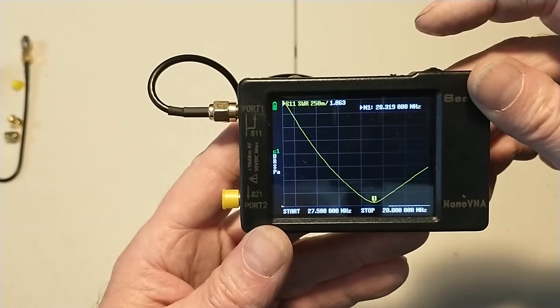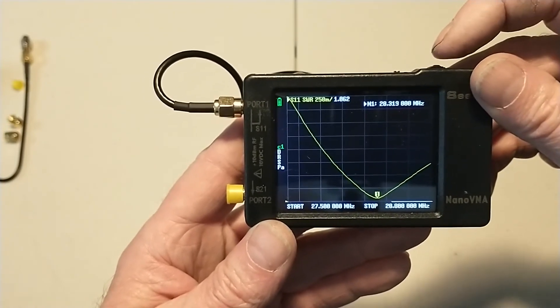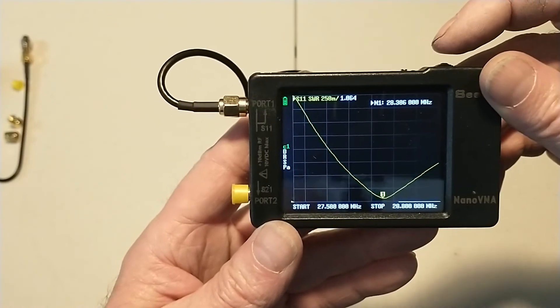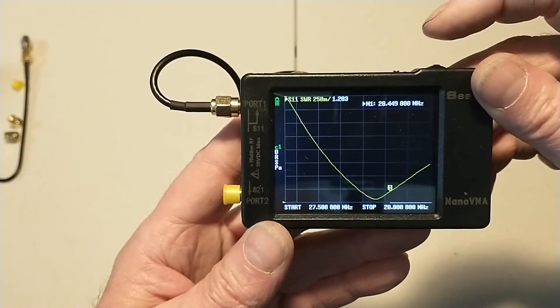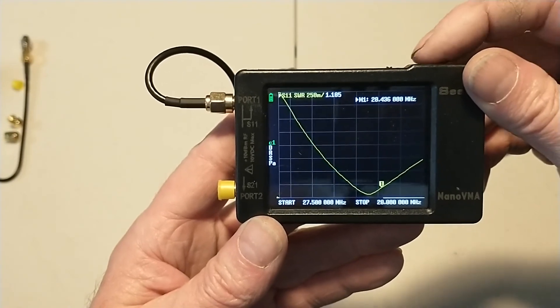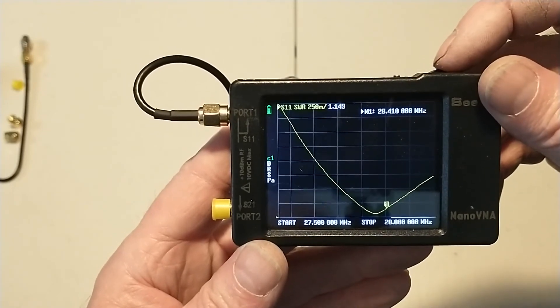So now we're resonant at 28,300 roughly, 320. And at the calling frequency we're still 1.1. So I think that will do.